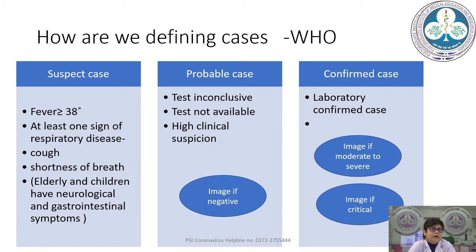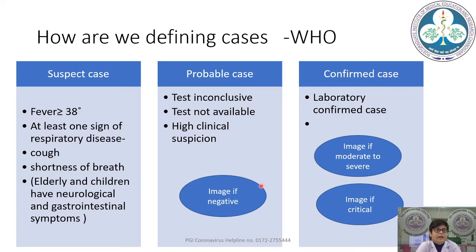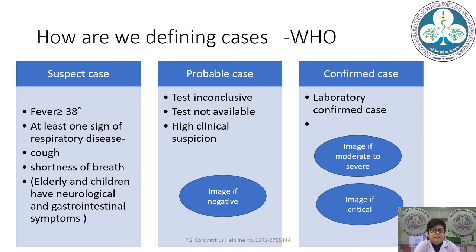Where imaging is required: in a suspect case, imaging may be deferred in most scenarios unless the patient is hemodynamically unstable or has another pathology requiring urgent imaging due to a life-threatening situation. In a probable case where the test is unavailable or inconclusive but clinical suspicion is high, imaging plays a more important role. In confirmed cases, imaging is not required in most mild cases but is required in moderate to severe or critical cases.